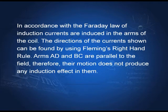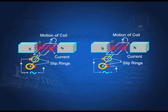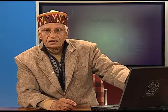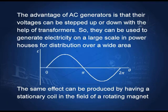Arms AD and BC are parallel to the field, therefore their motion does not produce any induction in them. The current induced in the coil is passed to a load in an outer circuit through the slip rings. The output is an alternating current: the current grows, becomes maximum, decreases to zero, and in the next half cycle it goes in the negative direction to maximum magnitude and comes back to zero. This is the alternating current which the electric generator or dynamo produces.